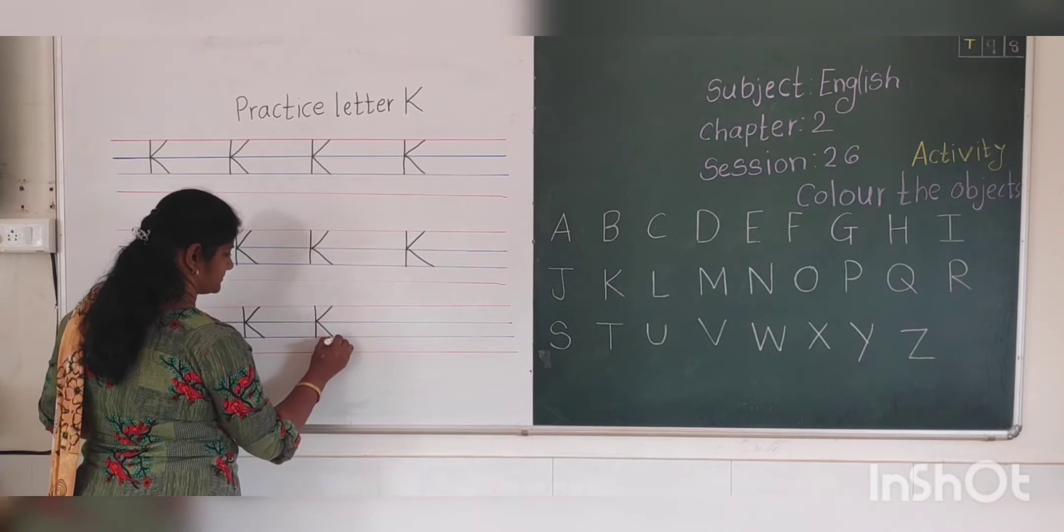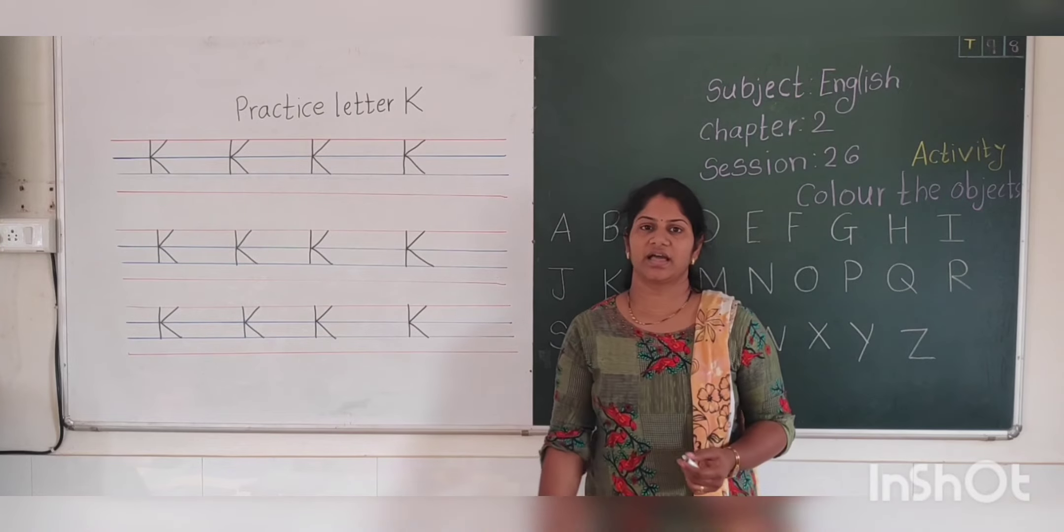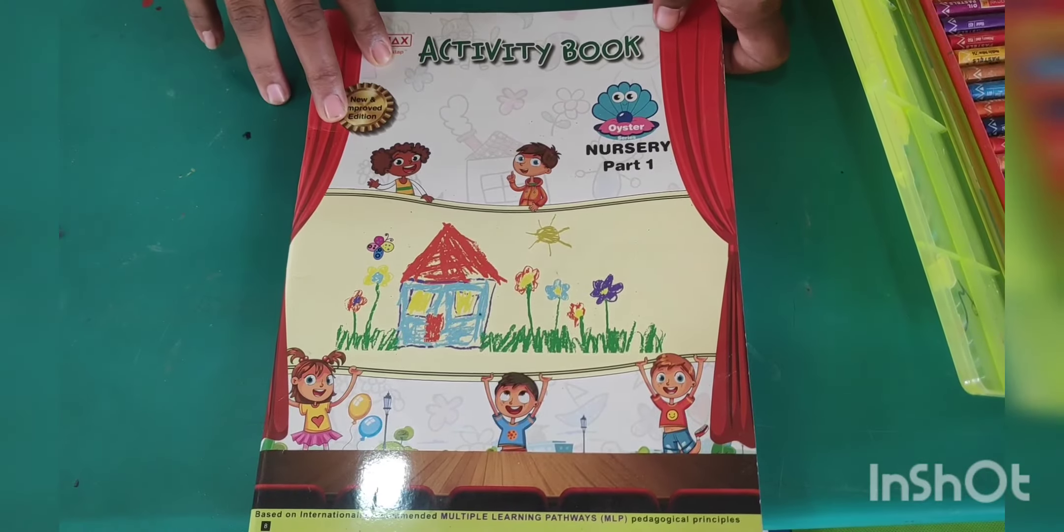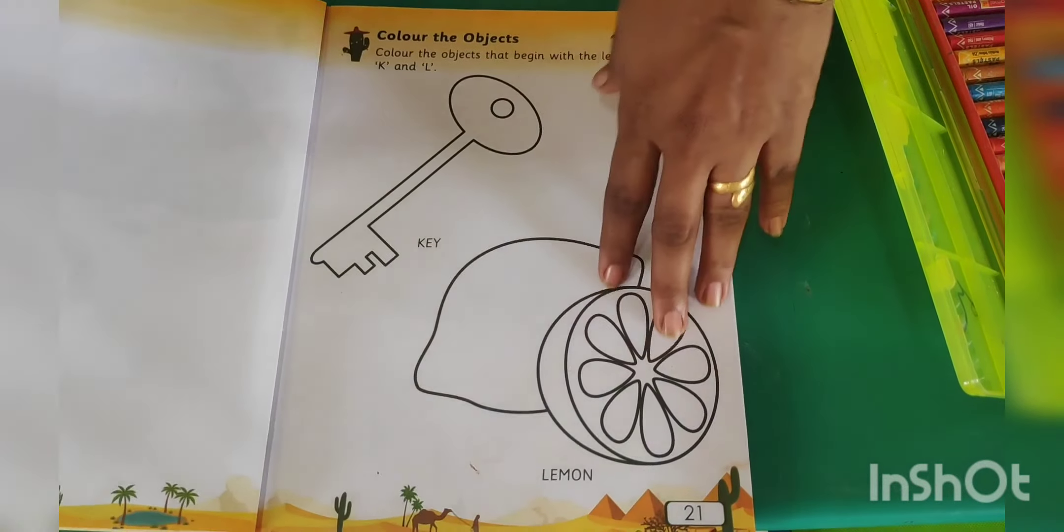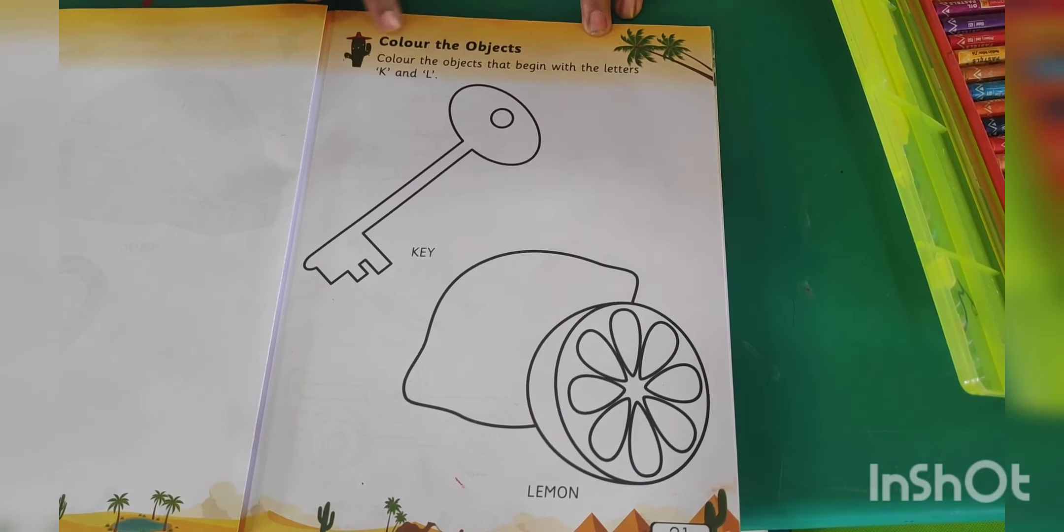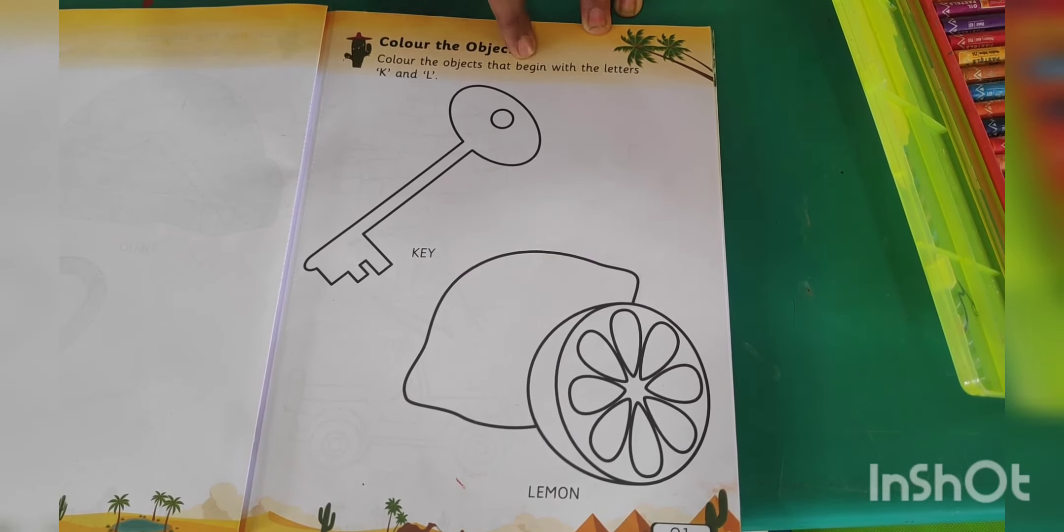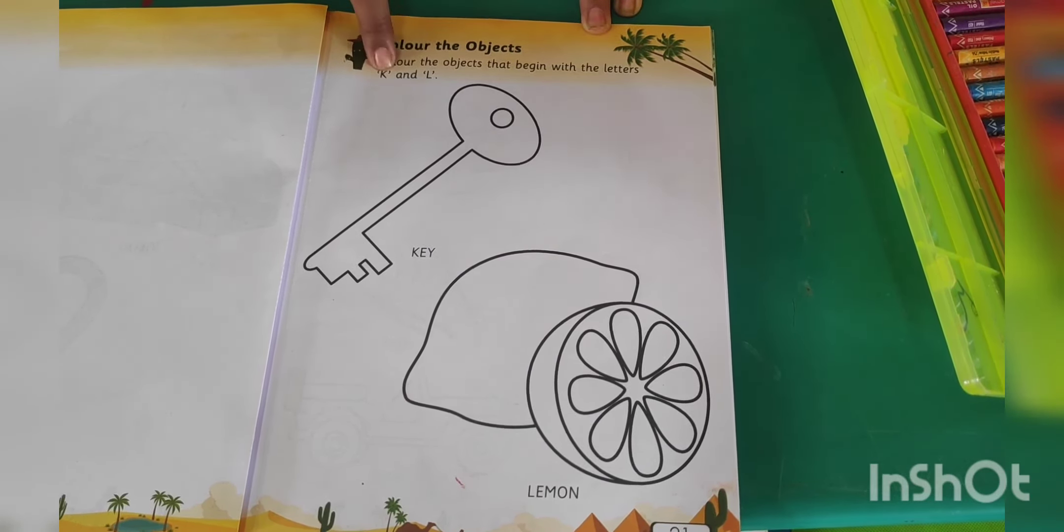Like this, you have to write in your notebook. Letter K. Okay. Now, activity book. This is your activity book, page number 21. Color the objects.